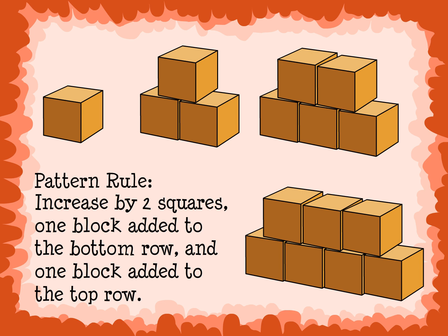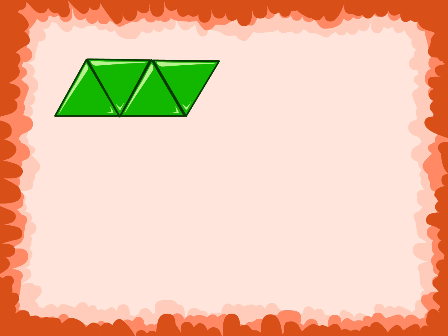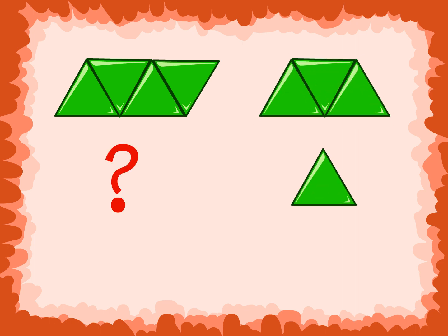Let's try another one. Here we have four triangles. Next we have three triangles. Here is the missing set and then we have one triangle. We need to figure out what the missing set is.